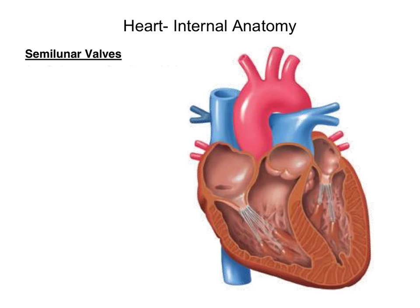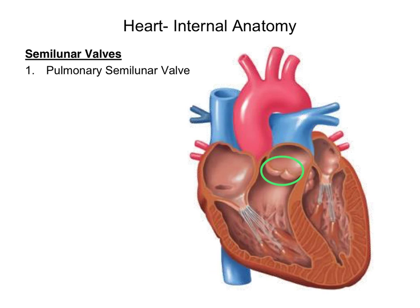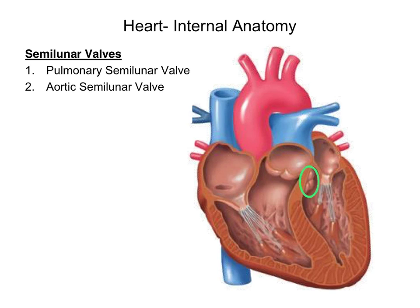Next, we're going to take a closer look at the semilunar valves. There are two semilunar valves found within the heart. The first valve is called the pulmonary semilunar valve, found between the right ventricle and the pulmonary trunk. Its function is to prevent oxygen-poor blood within the pulmonary trunk from flowing back into the right ventricle. The second semilunar valve is called the aortic semilunar valve, found between the left ventricle and the aorta. Its function is to prevent oxygen-rich blood within the aorta from flowing back into the left ventricle.